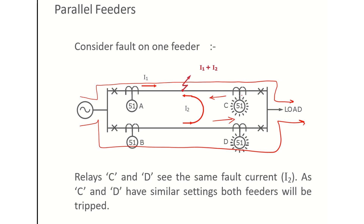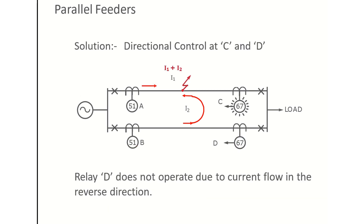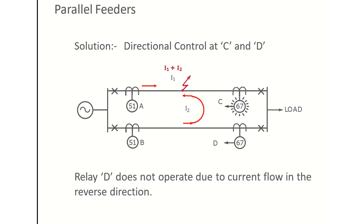For this fault on feeder 1, the current direction at relay D is the same as the normal load current direction, so relay D will not operate. But at relay C, the current direction is opposite to load current, so relay C will operate. Earlier we were using relay type 51 — time delayed overcurrent relays — which can be definite time or IDMT. Type 67 is the directional overcurrent relay, so C and D both become directional overcurrent relays.